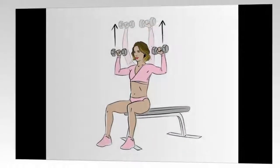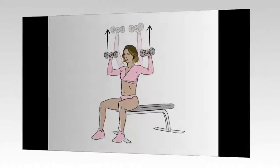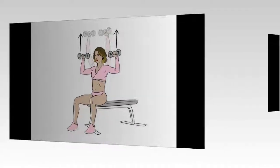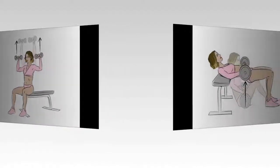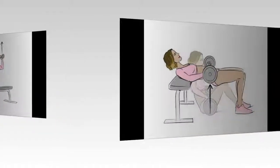Holding dumbbells, slowly lunge forwards, keeping the knee in line with the toe. Without stopping at the bottom, push back up to the start position. Now swap legs.